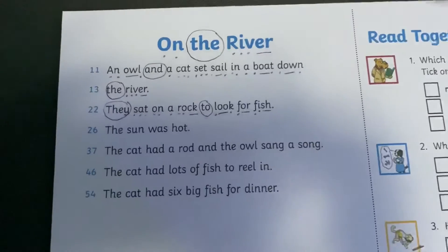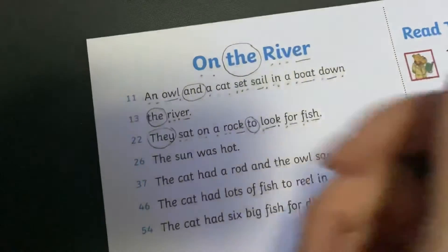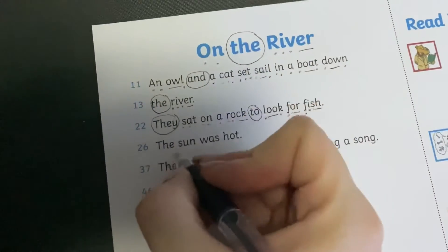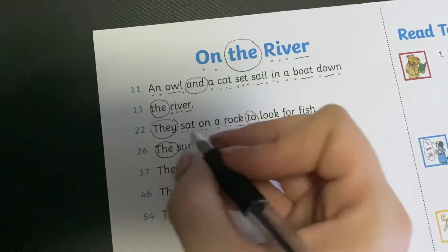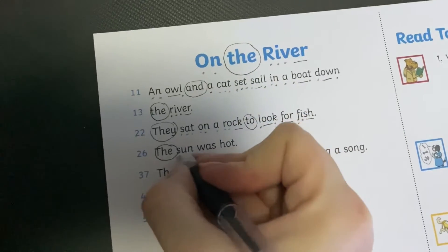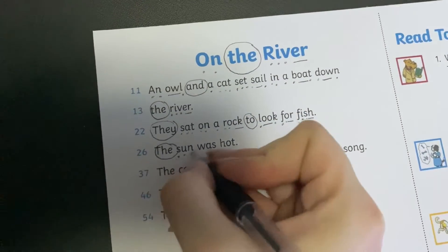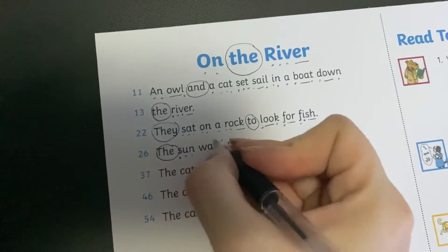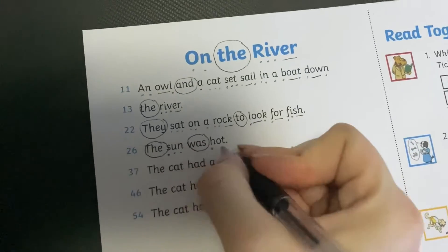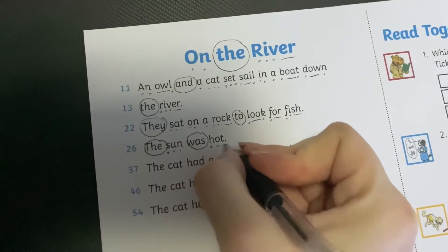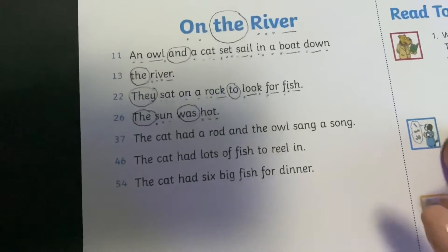Tricky word: 'the.' S-u-n — 'sun.' Tricky word: 'was.' H-o-t — 'hot.' The sun was hot. Do you think the fish smell nice in the warmth?